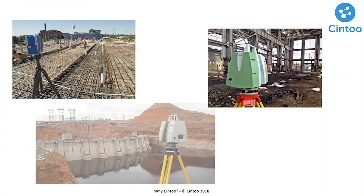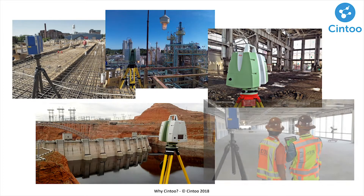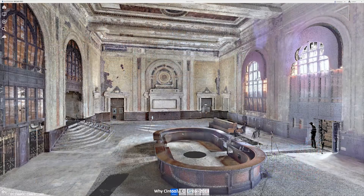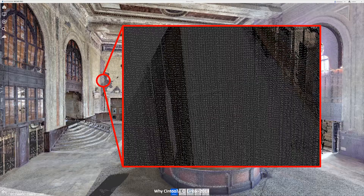In architecture, engineering, and construction, people use terrestrial laser scanners to get the as-built conditions prior to a renovation project, or to monitor a site during construction. Those devices are becoming cheaper and cheaper and much easier to use. They produce a very accurate 3D point cloud — cool reality data — which can be used in any CAD software such as AutoCAD or Revit.